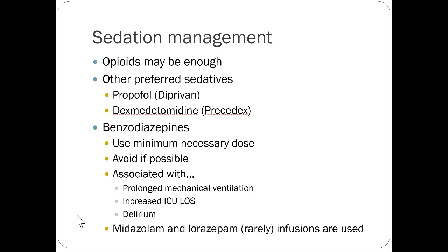Sedatives like propofol and dexmedetomidine have minimal to no analgesic component. They provide amnesia and sedation but not pain relief — the patient may still be in pain even if they don't remember it. This increases delirium and ICU length of stay. Benzodiazepines are generally avoided in the ICU because they're associated with prolonged mechanical ventilation, increased length of stay, and delirium.